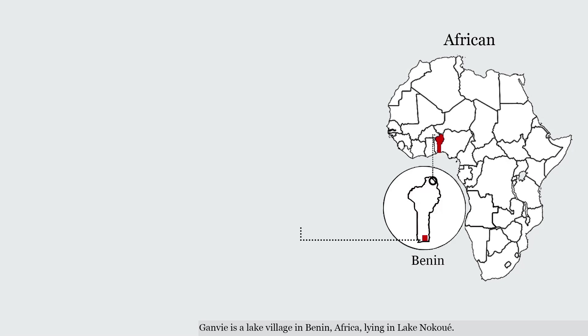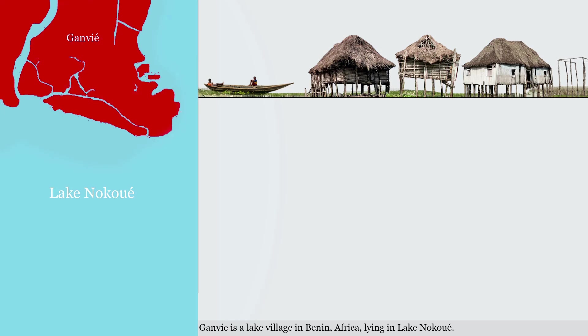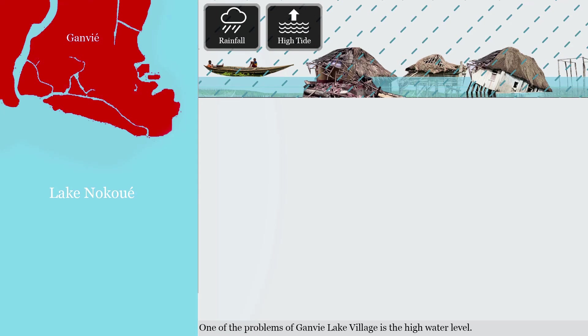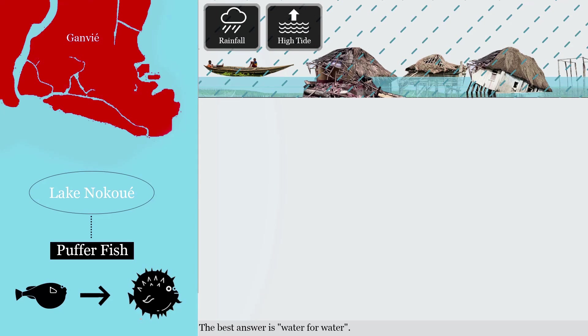Ganvi is a lake village in Benin, Africa, lying in Lake Nokoué. One of the problems of Ganvi lake village is the high water level. The best answer is water for water.